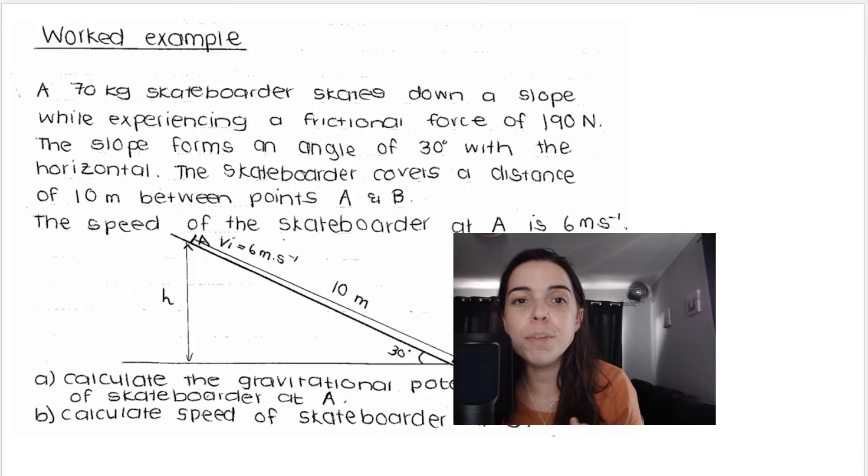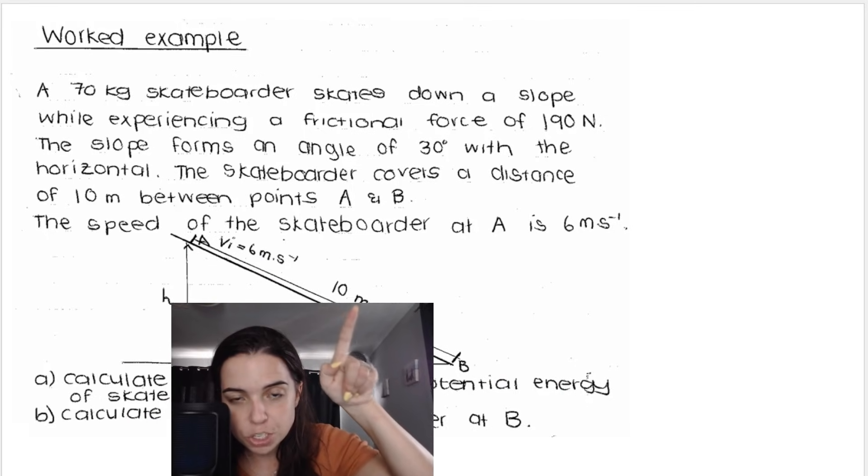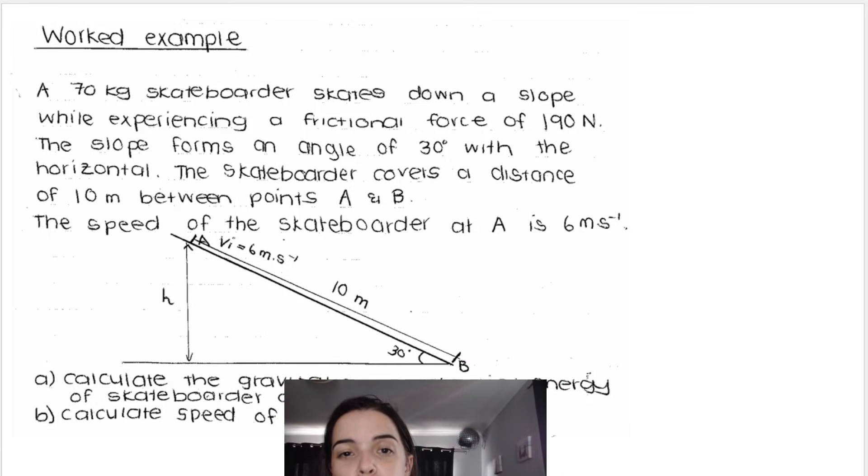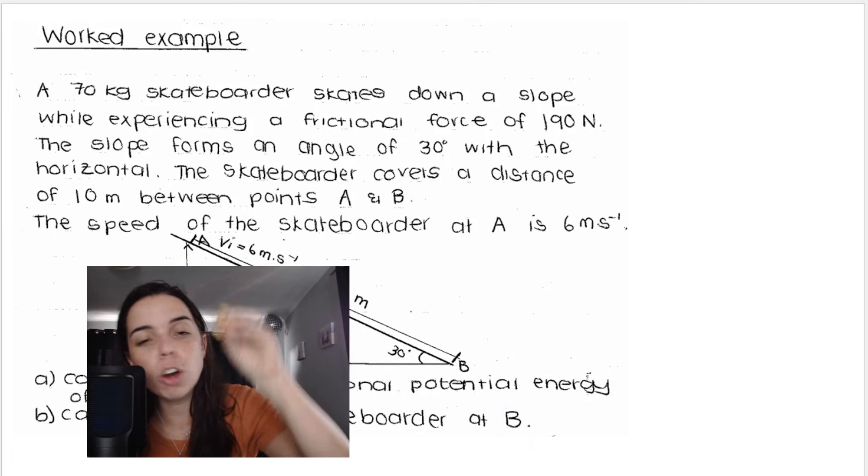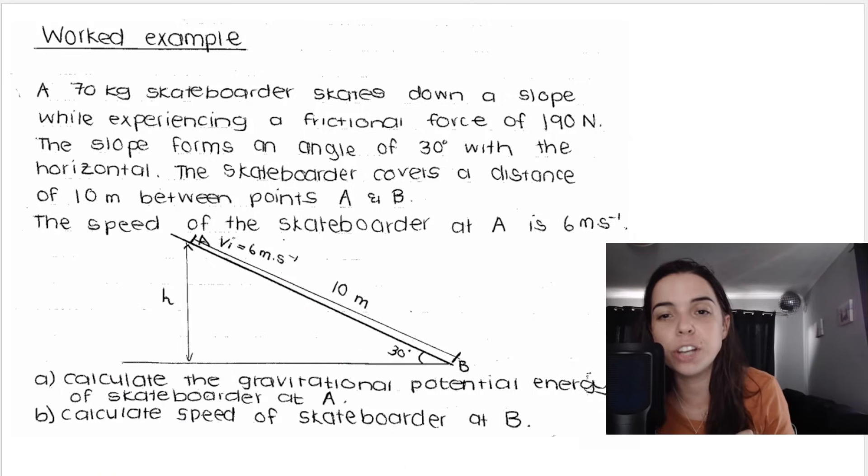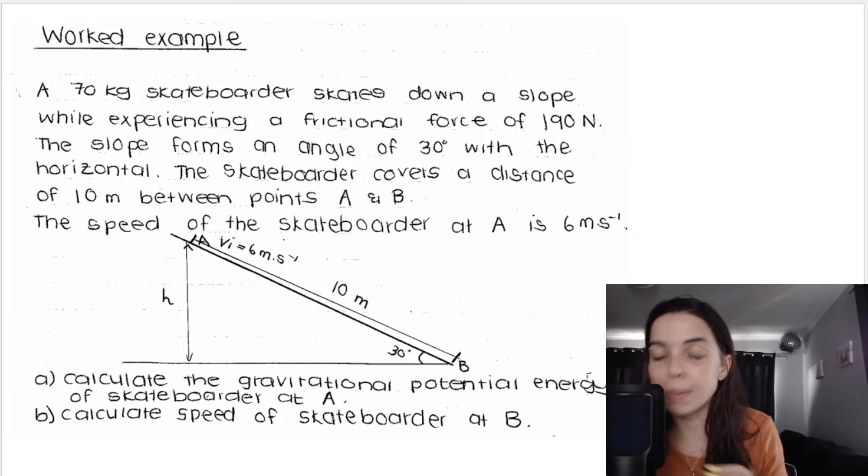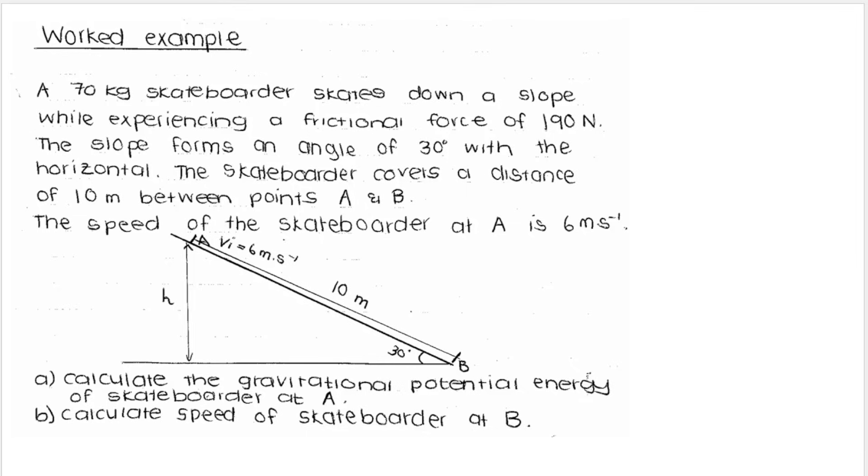They give me the angle of the slope and they say that the skateboarder covers a distance of 10 meters between points A, which is here at the top of the slope, and B, which is here at the bottom. The speed of the skateboarder at A is 6 meters per second. So we can't assume that the skateboarder was initially stationary. They tell me that there's an initial velocity. My first question is quite simple and straightforward. Don't overcomplicate it.